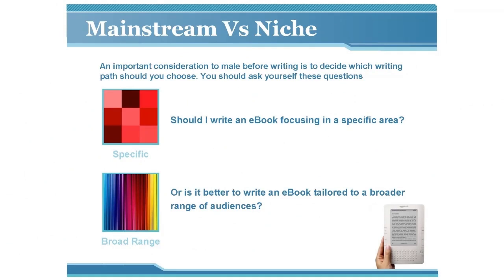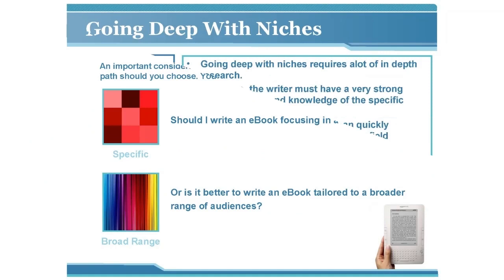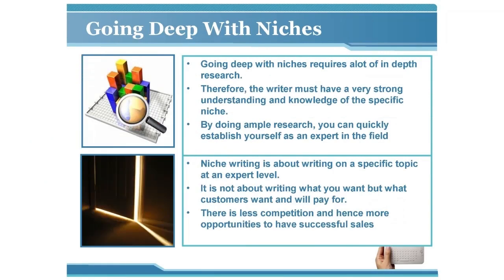Writing for audiences means having to choose between mainstream topics and more specialized niche topics — one of the most crucial decisions you'll make as a writer. Each has its pros and cons, as we ask: should I write an ebook focusing in a specific area, or is it better to write an ebook tailored to a broader range of audiences?